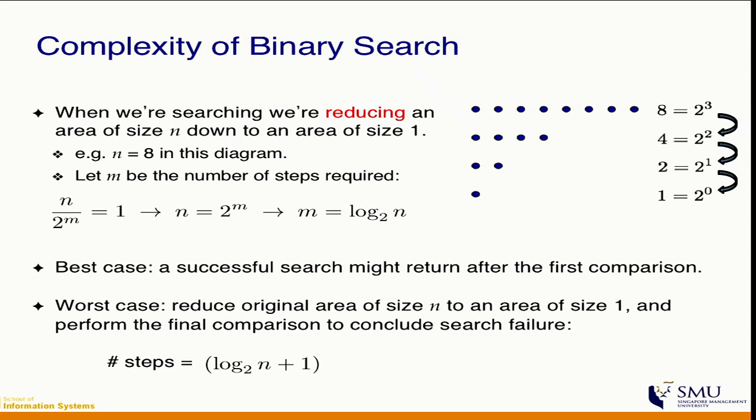Log n is very efficient. If you double the array — going from 8 to 16 — binary search only needs one more operation, one more division. Even going from 1 million to 2 million, it's only one more. That is not the same as linear search, which is O(n): if you double the array, you need to double the number of operations. Going from 1 million to 2 million with linear search means 1 million more operations, not just one more. So the complexity of binary search is O(log n).